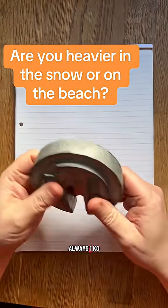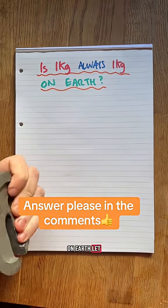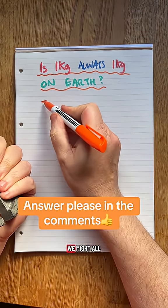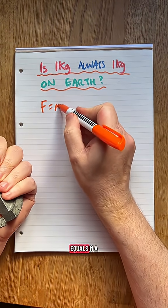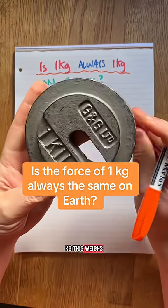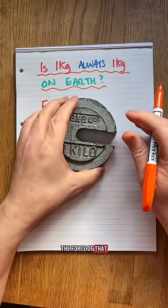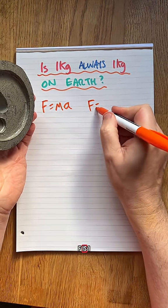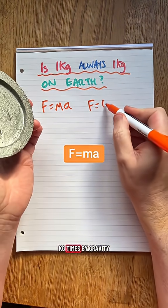Is one kilogram always one kilogram on Earth? Let me explain. We might all know F = ma. There's my one kilogram. This weighs—the force of that is going to be F = 1 kilogram times a.